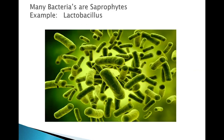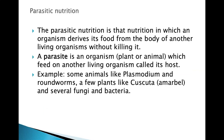Other examples of saprotrophs are Lactobacillus, which is found in curd and many dairy products like cheese and paneer.